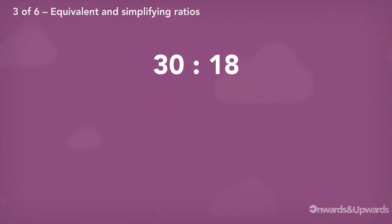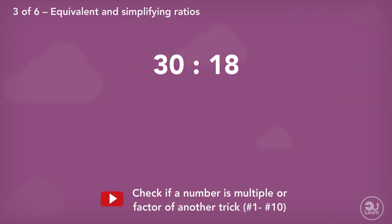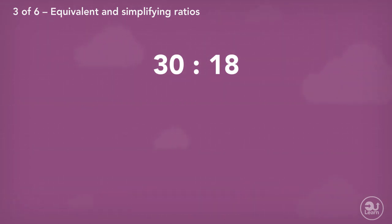With bigger numbers, it can sometimes be a little challenging to see straight away the common factors. To see how to check if a number can be divided by the first ten numbers, check out our video on this. Info is inside the description. It is always good to start small and work your way through. Both these values are even numbers, so we know they can both be divided by two, giving us the new ratio of 15 to 9.